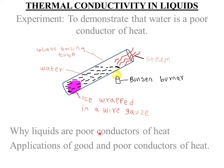Why are most liquids poor conductors of heat? Liquids are poor conductors of heat because pure liquids have molecules which are further apart from each other. Due to the large intermolecular distances between the liquid molecules, that prevents collision of the liquid molecules, hence no heat is transferred.